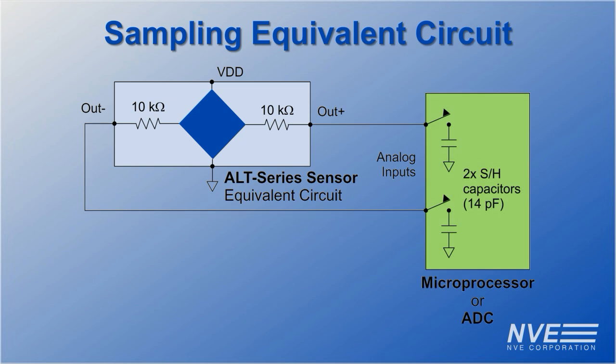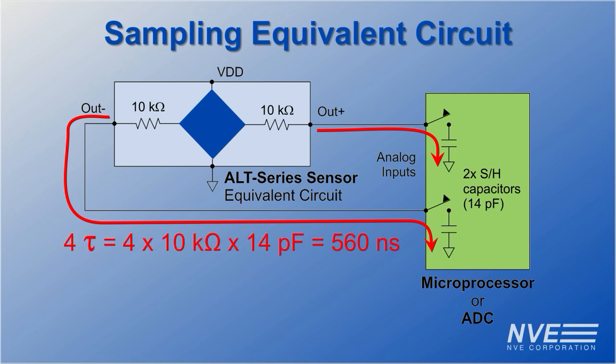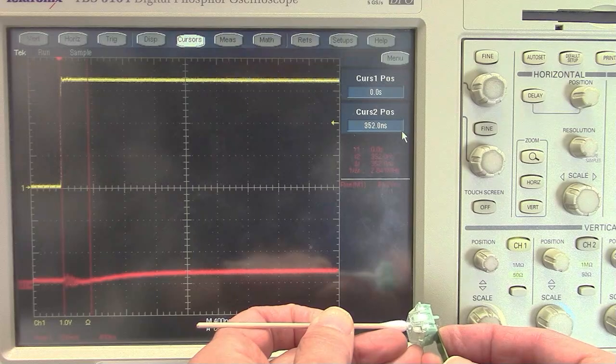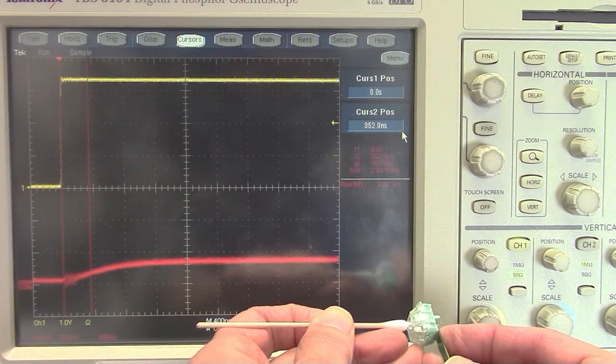Assuming a sample-and-hold capacitance of 14 picofarads, a one-microsecond sampling time is usually plenty. These sensors are sensitive as well as fast. The output swing is 500 millivolts over just a few millimeters of switch and magnet travel, even with no amplification.